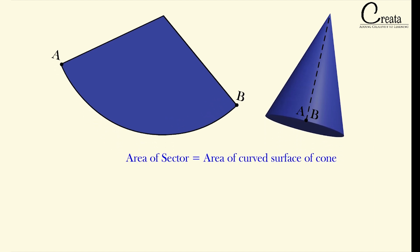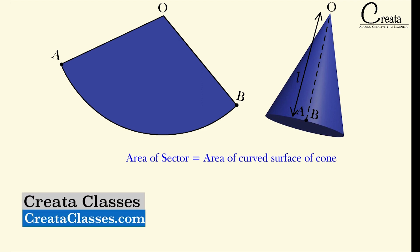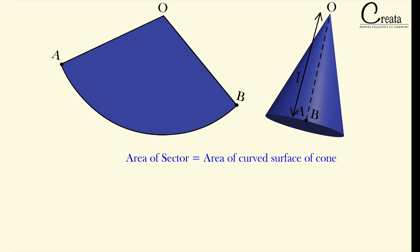Let's mark the dimensions of this sector. The topmost vertex of the cone is point O, and points A and B are the two extreme ends of the cut curved surface — A and B are the same point. The distance OA and OB will be equal to L, the slant height, because slant height joins the topmost vertex with the circumference of the base circle.